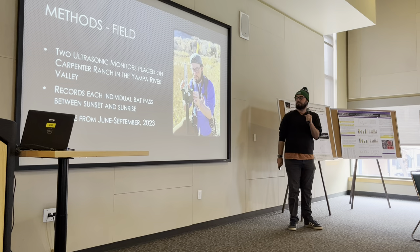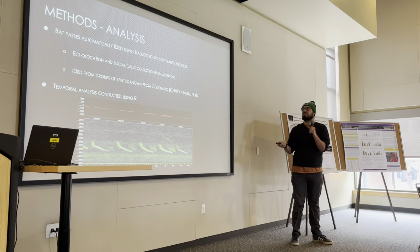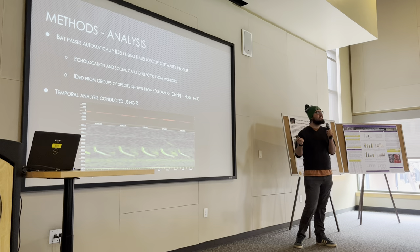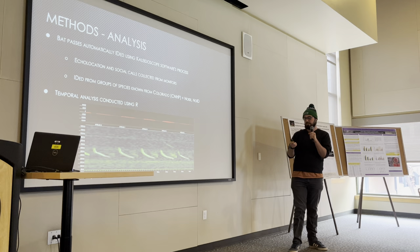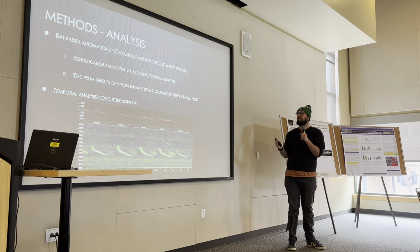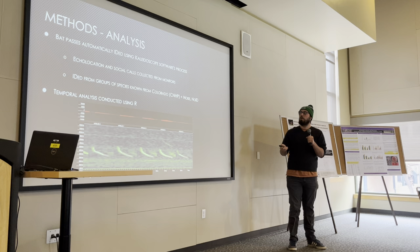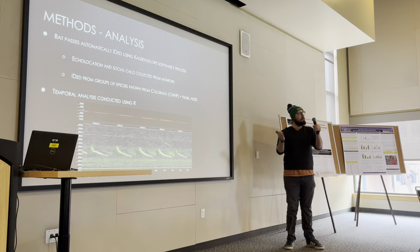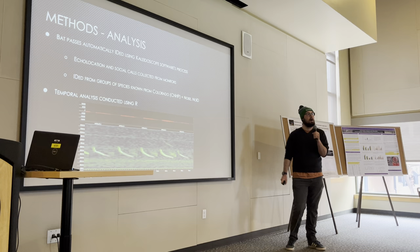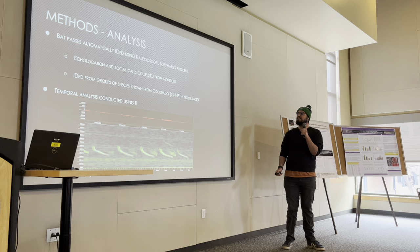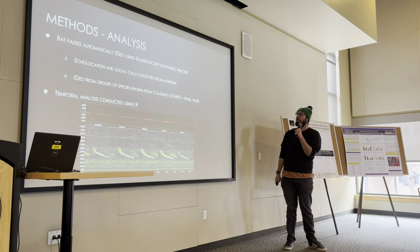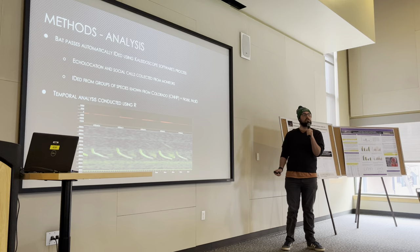Analysis was conducted using R and the Kaleidoscope software, which is designed to automatically identify bat calls. It compares recorded calls to known calls and identifies which species they best line up with. We had a group of 13 species expected to occur in this area that we plugged into the software. Those species were provided with help from the Colorado Natural Heritage Program. Calls that didn't fit any of those groups were placed in a no-ID or noise category. These calls can represent echolocation, hunting, or social calls from the species.